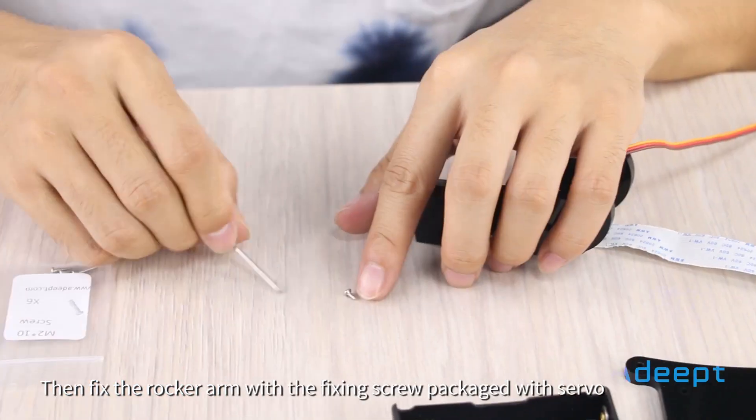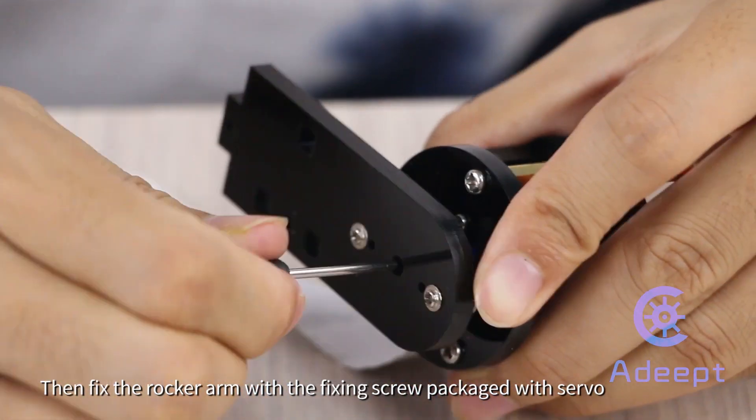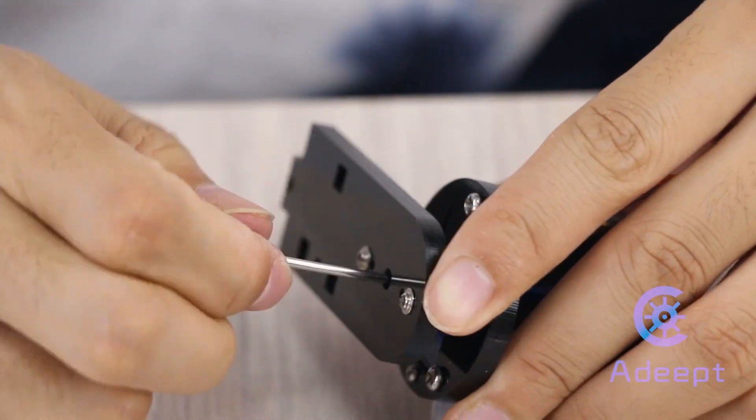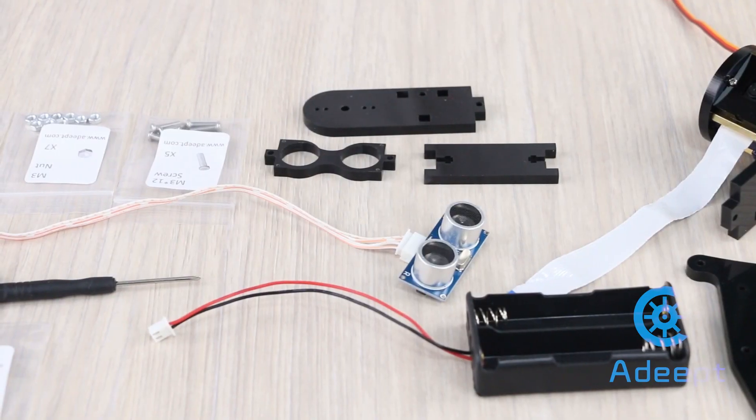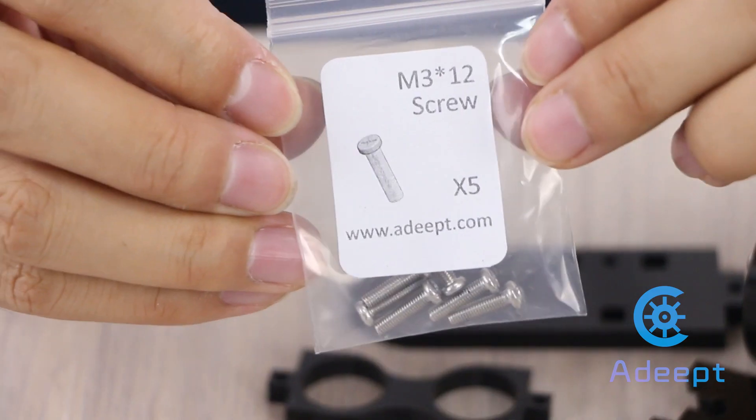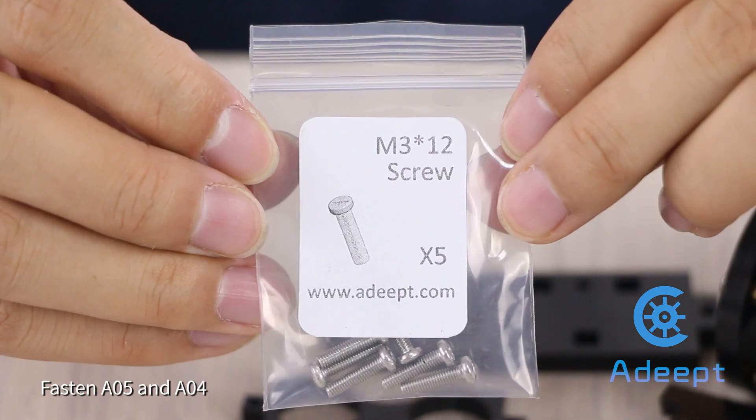Then fix the rocker arm of the base with the fixing screw packaged with servo. Fasten A05 and A04.